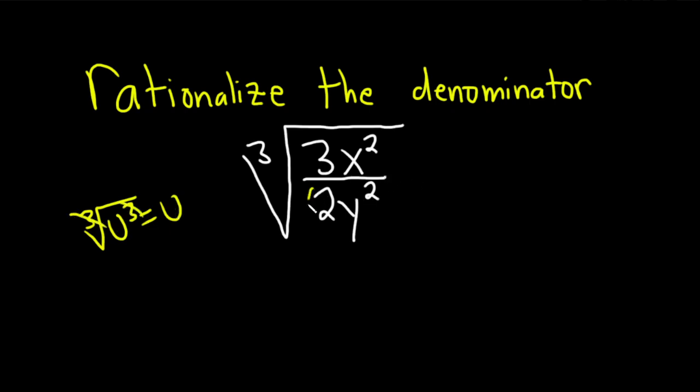So here we have 2y squared to the first power. What we're going to do is multiply it by the cube root of 2y squared to the second power so that when we multiply things, exponents get added.